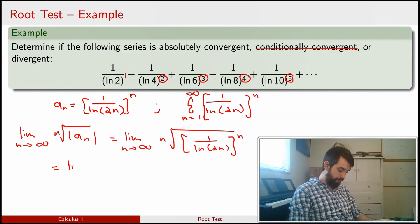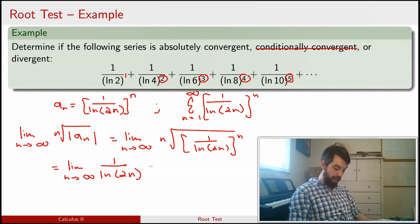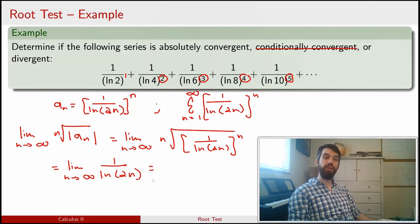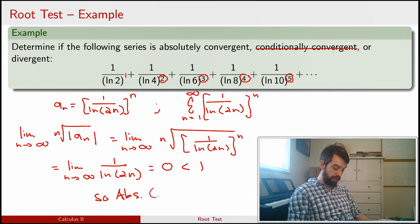And so what do I get? The limit as n goes to infinity of 1 divided by the natural log of 2n. And this thing is going to be going to 0. Natural log blows up to infinity, and this is going to be equal to 0. So this is a value less than 1, and so absolutely convergent by the root test.